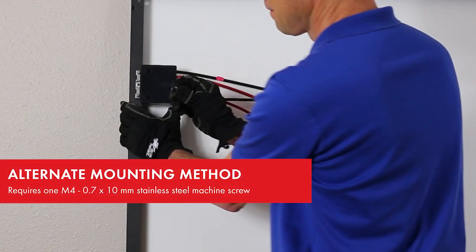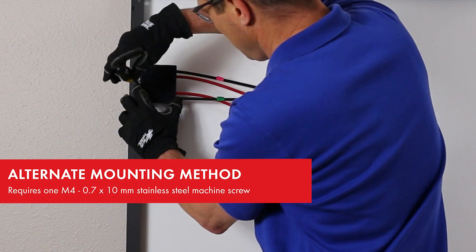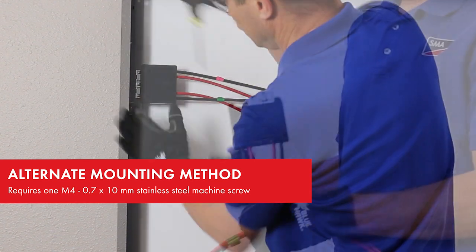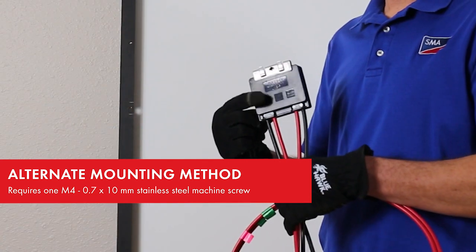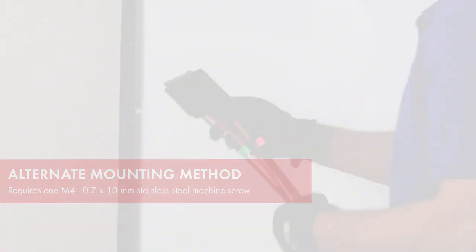The alternate mounting method uses the included 10 millimeter screw to hold the JMS-F against the module frame. Note, if utilizing this method, the face of the unit with the serial number will face towards the module backsheet.